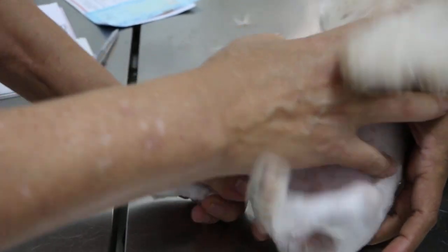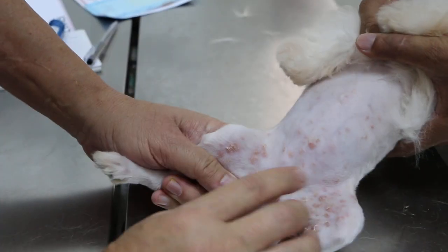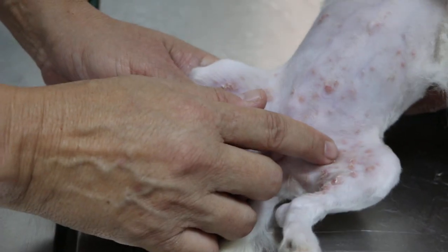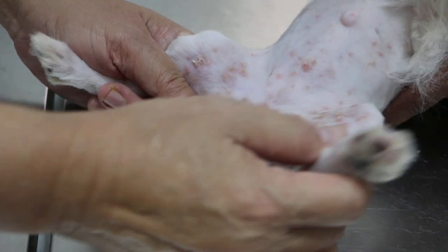Now I'm going to check these rashes. I will use the ultraviolet light. Hold properly. If there's fungus, the rashes will glow like fluorescent under the light.